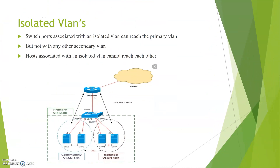What is an isolated VLAN? Here I have connected 2 servers to isolated VLAN 102. These 2 servers cannot communicate with each other — they are isolated from each other. These ports also cannot communicate with any community VLAN or any other secondary VLAN, but they can still reach the primary VLAN, that is the router.